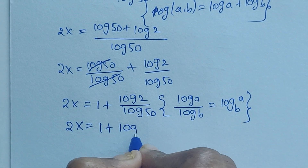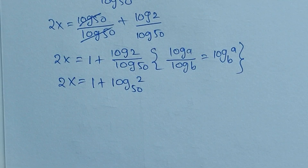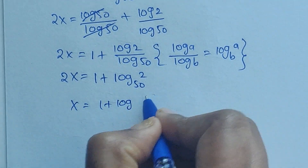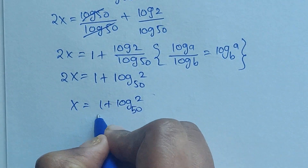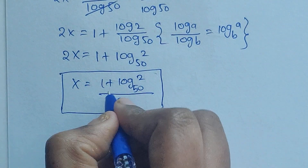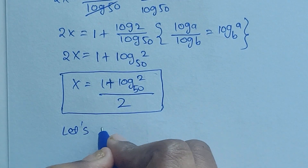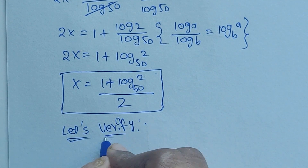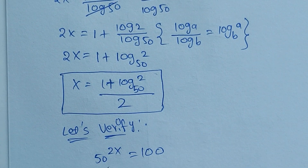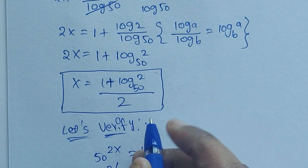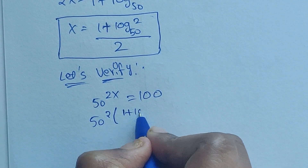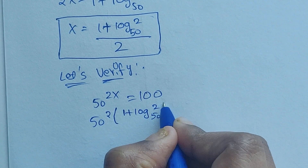So 2x equals 1 plus log of 2 base 50, which means x equals 1 plus log of 2 base 50, divided by 2. This is the x value. Now let's verify by substituting back: 50 to the power of 2x equals 100, so we substitute x equals (1 plus log of 2 base 50) divided by 2.